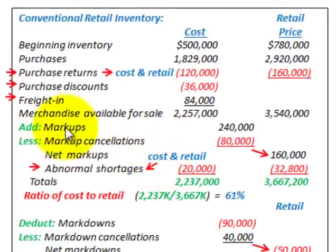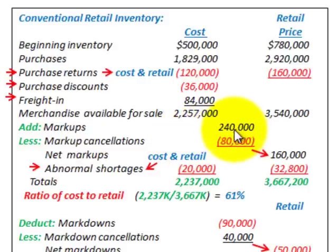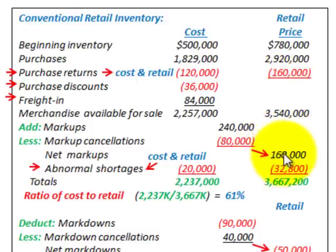For the conventional retail method, we add our markups — in this case $240,000 — and then subtract markup cancellations to arrive at our net markups. Net markups affect only the retail price column; they are an addition to the retail price and do not affect cost.